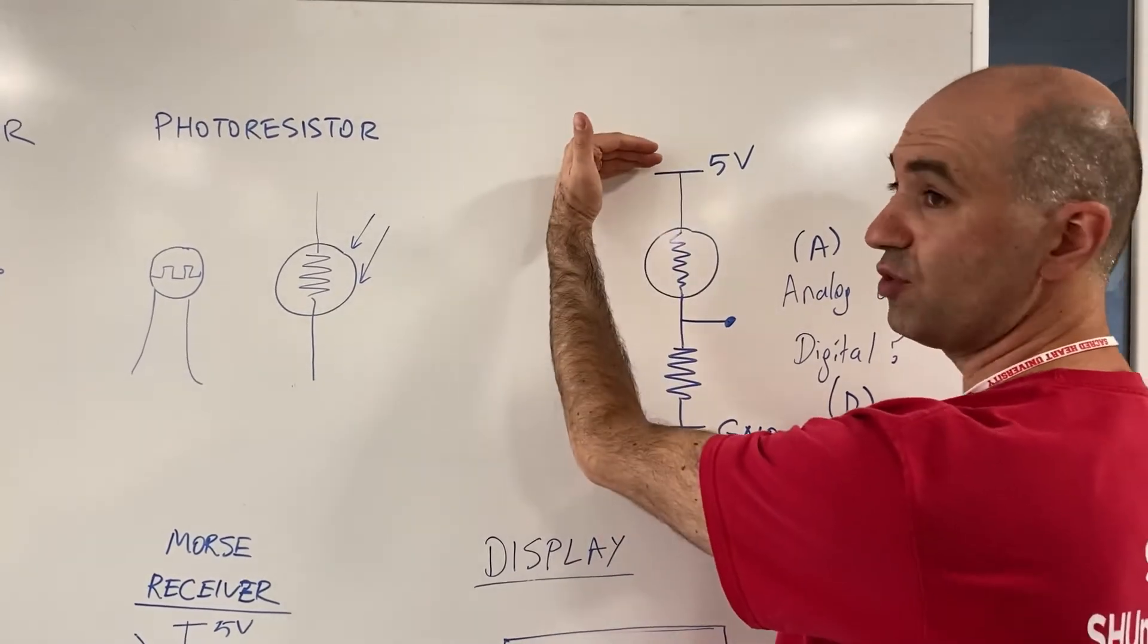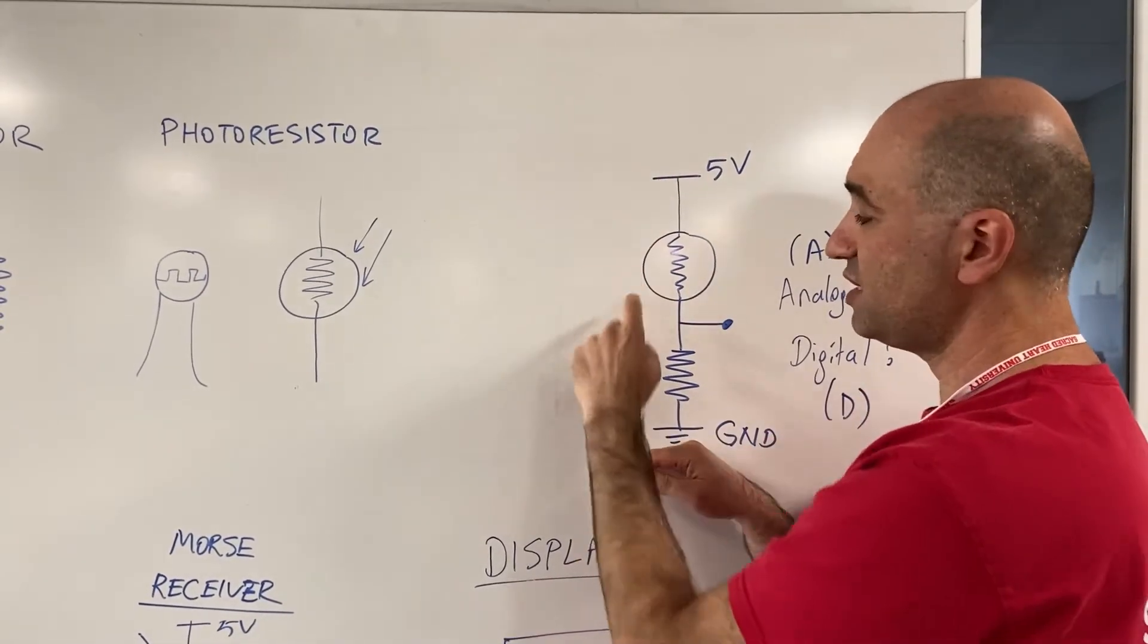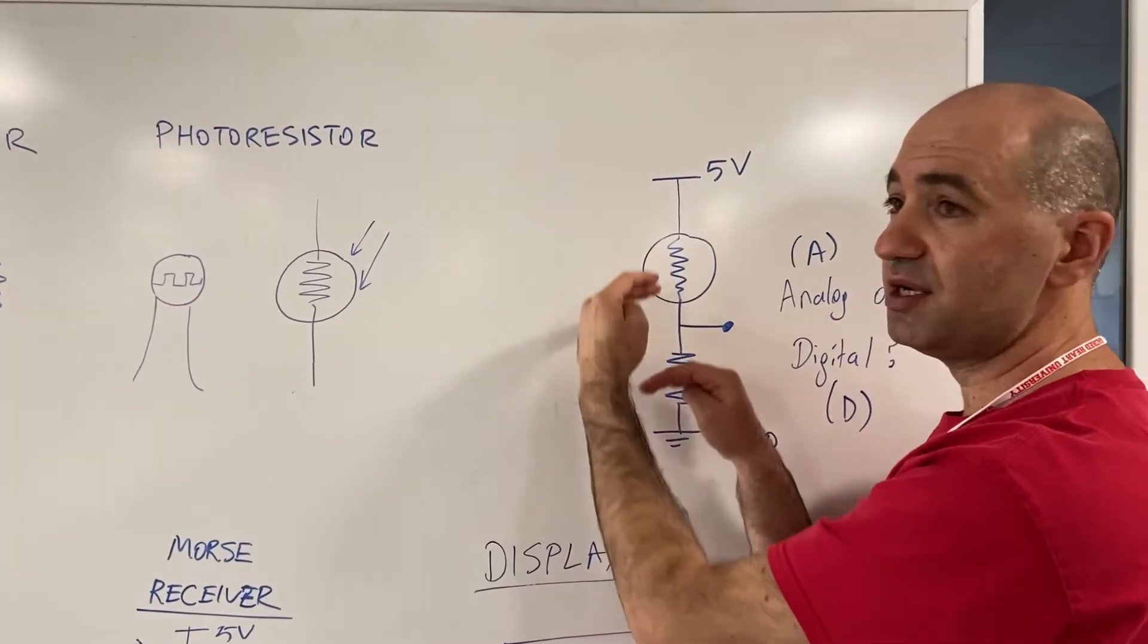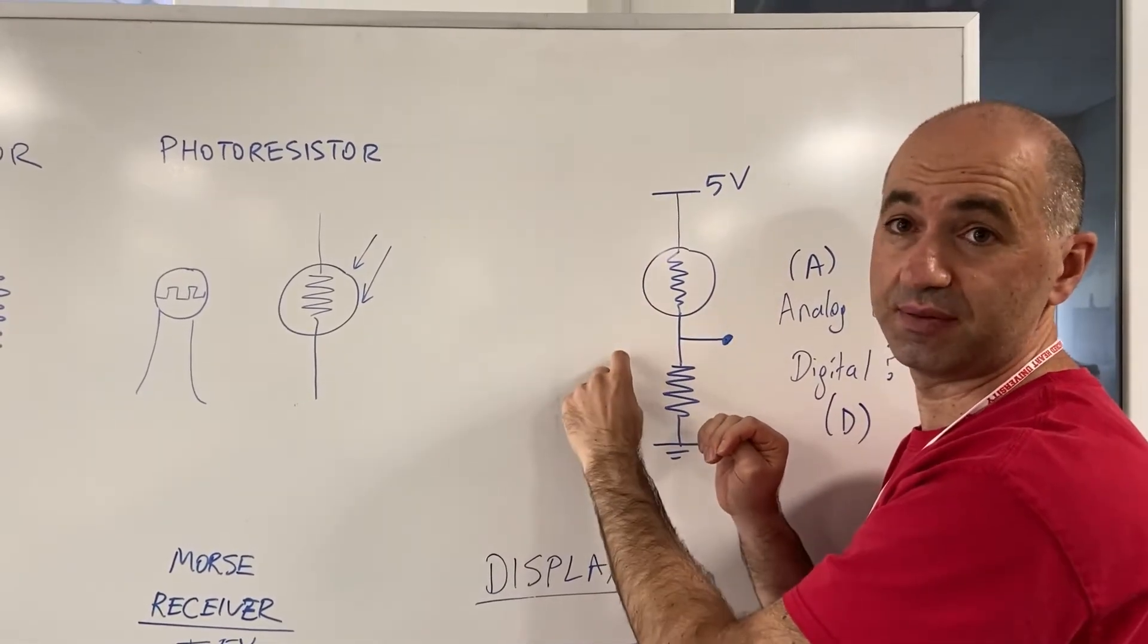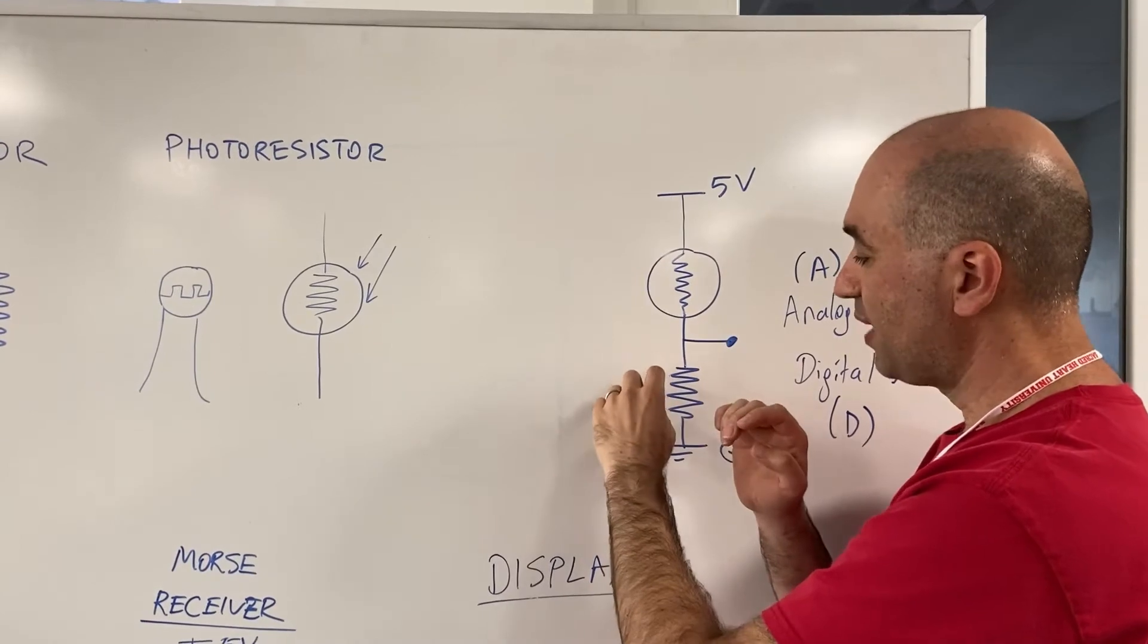These resistors have a total voltage of five volts. What these resistors do is they actually share this voltage according to how much their resistance is.